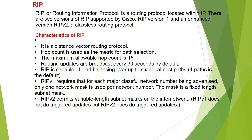Key characteristics of RIP: it is a distance vector routing protocol. Hop count is used as the metric for path selection. The maximum allowable hop count is 15. Routing updates are forwarded every 30 seconds by default.